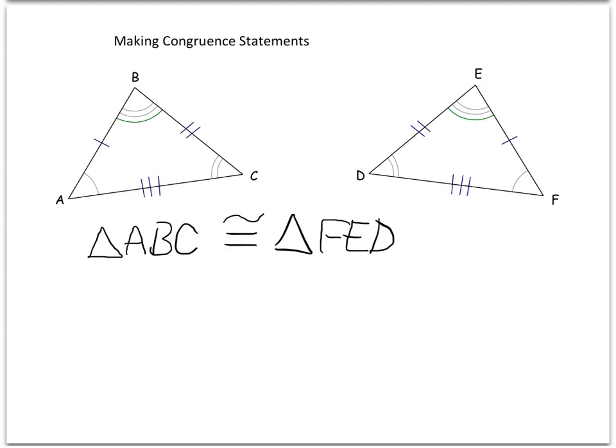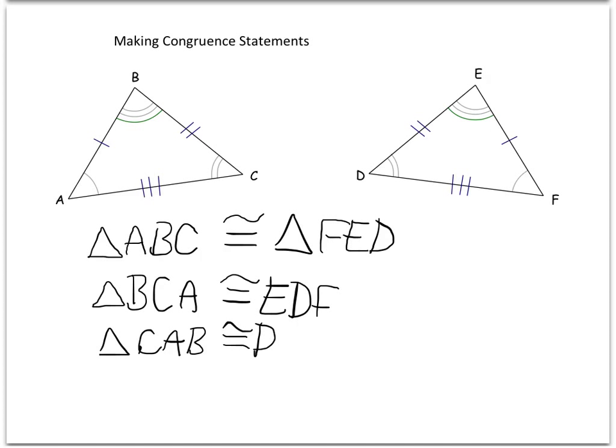Now, this isn't the only way I could have named my triangle. I could have started at any other vertices, so I could have named this triangle BCA, which is congruent to B matches up with E, C matches up with D, and lastly F. That's another way to do this. Again, a third way, I could have named this triangle CAB, which is then congruent to C matches up with D, A matches up with F, and B matches up with E.